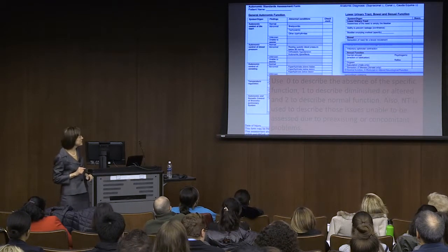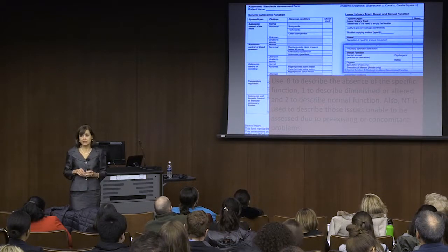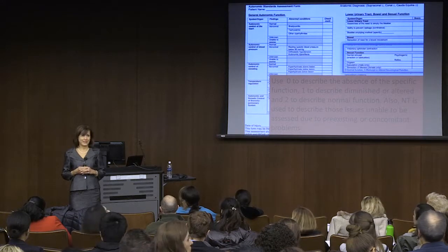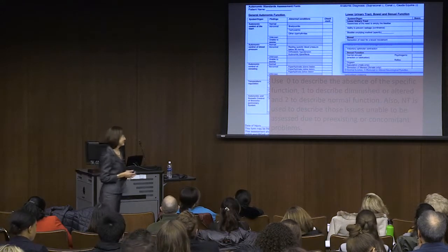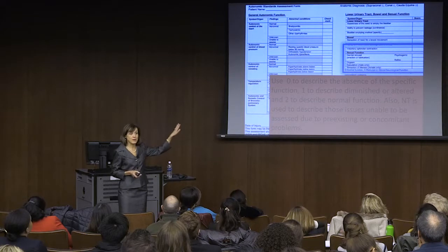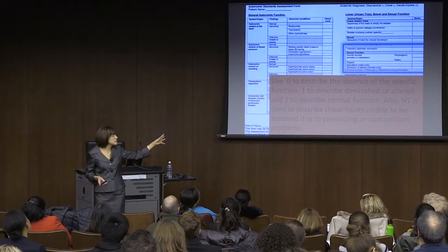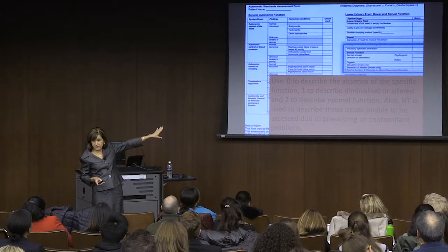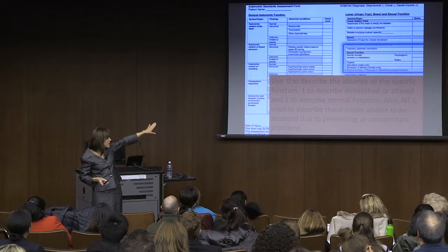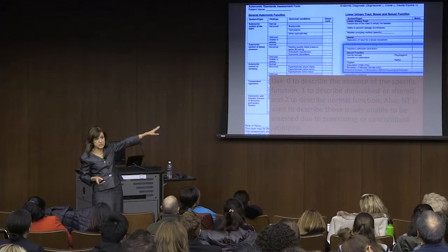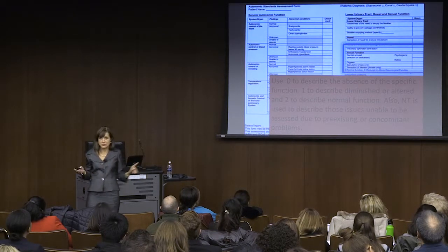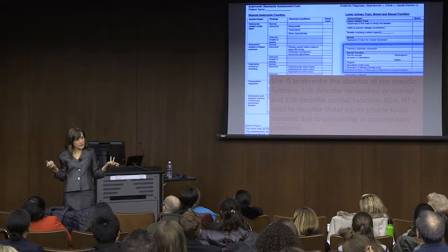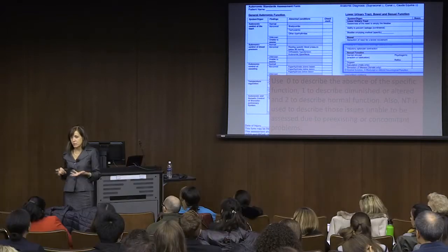On this autonomic standards form—how many of you have ever seen or heard of this? We've got a lot of work to do. What you can do is document on here what's present: does the person have genital arousal, and if so, do they have psychogenic and reflex arousal? Do they have orgasms, ejaculation, menses, and sensation? We made the grading the same way as the neurologic exam: zero means no function, one means partial function different from normal, and two means normal function.